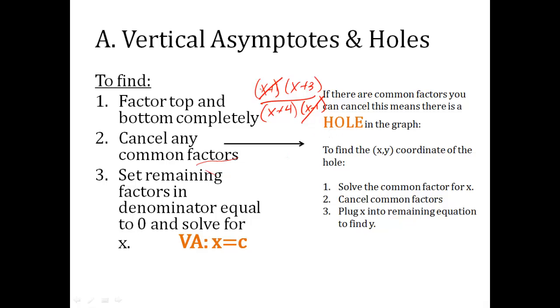Now, if there is a common factor you can cancel, that represents a hole in the graph. To find the xy coordinate of the hole, you solve the common factor for x. So in this case, x minus one equals zero. That means x is one.